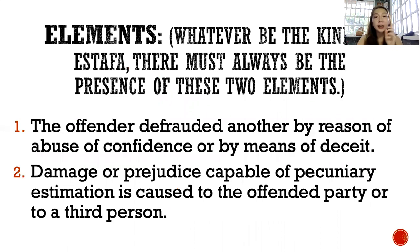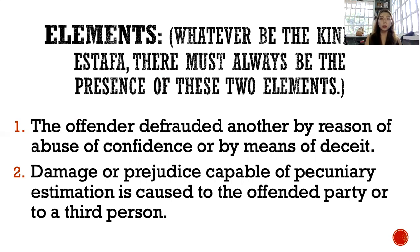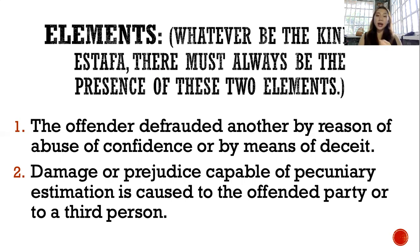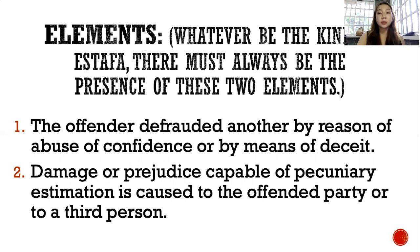Whatever kind of estafa — among the three — there are always two general common elements. First, that the offender defrauded another by reason of abuse of confidence or by means of deceit. Second, damage or prejudice capable of pecuniary estimation is caused to the offended party or to a third person. It does not necessarily mean there must always be deceit — in lieu of deceit, estafa can be committed by means of abuse of confidence.